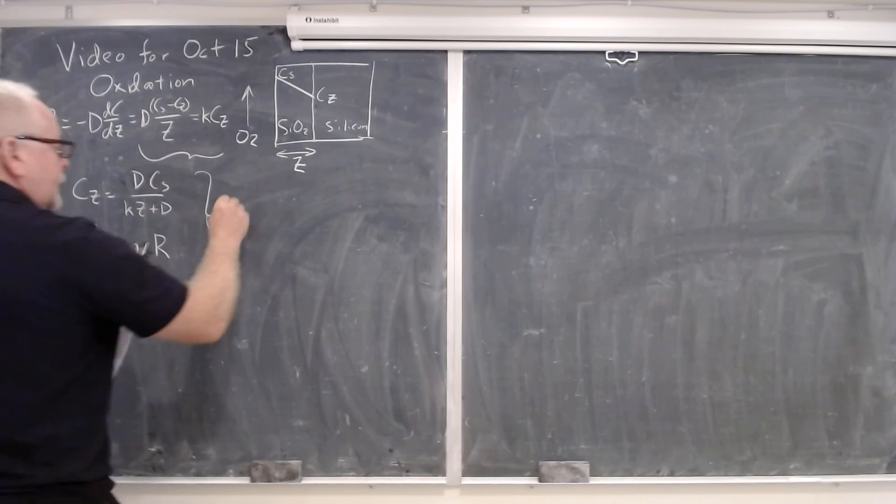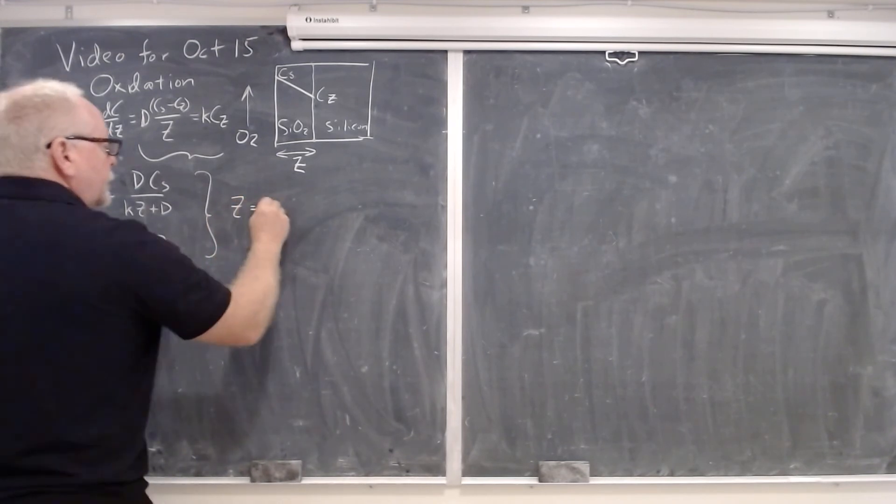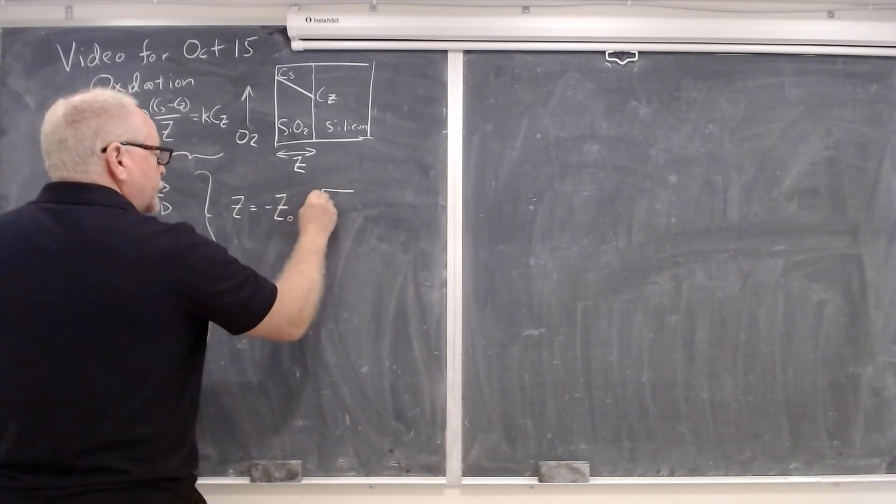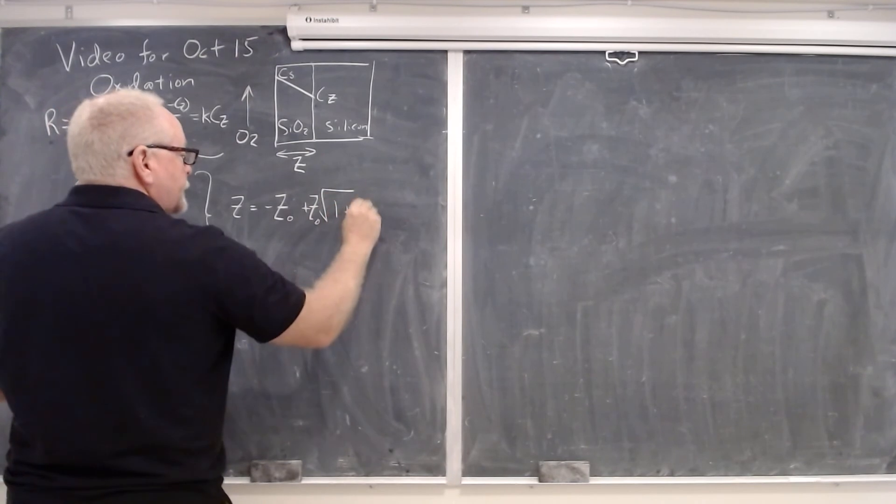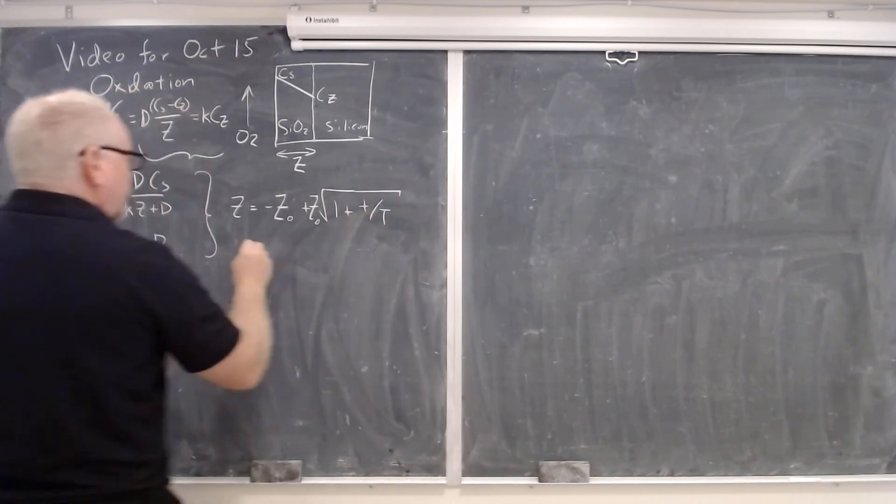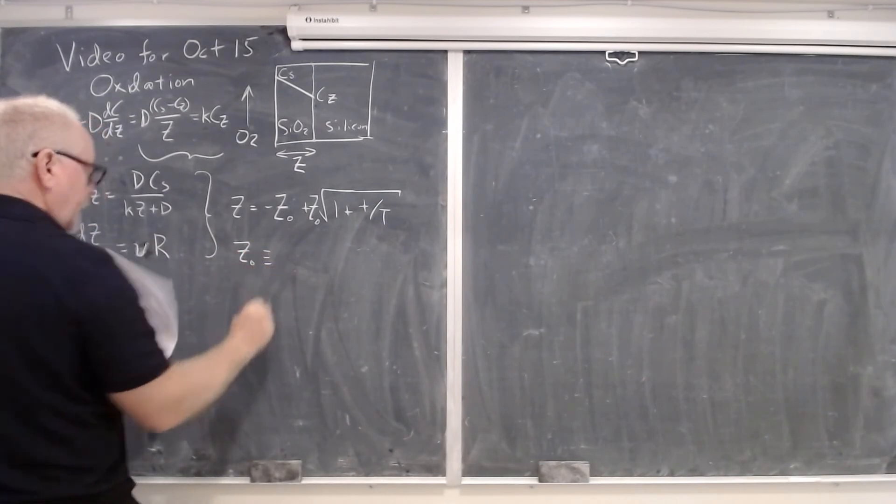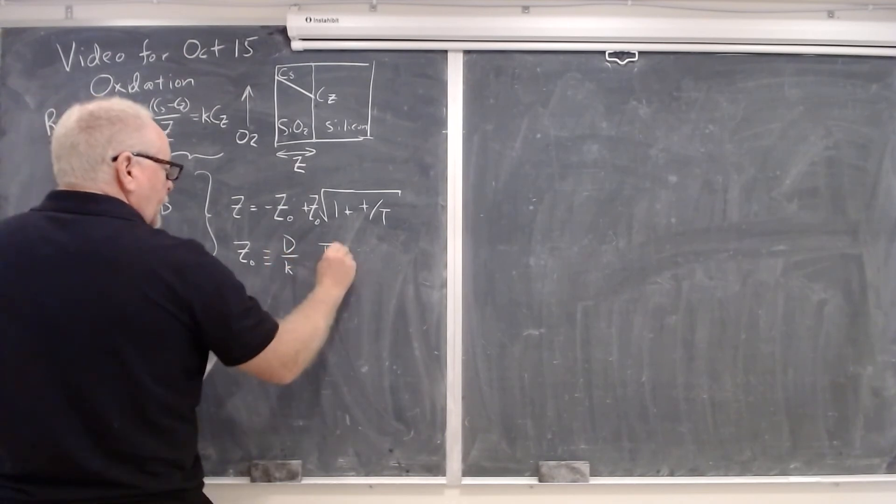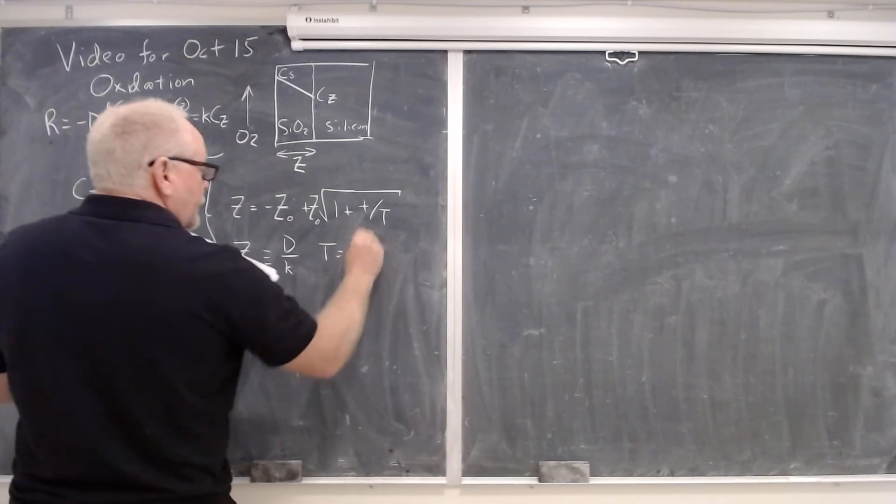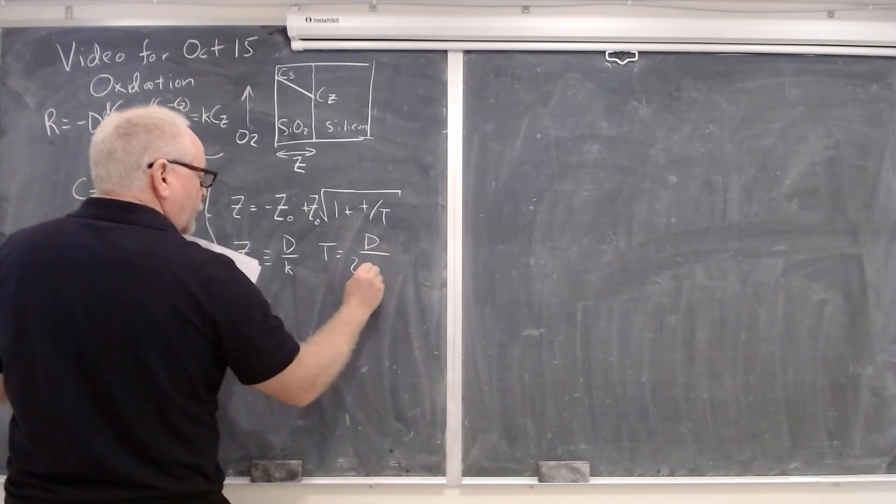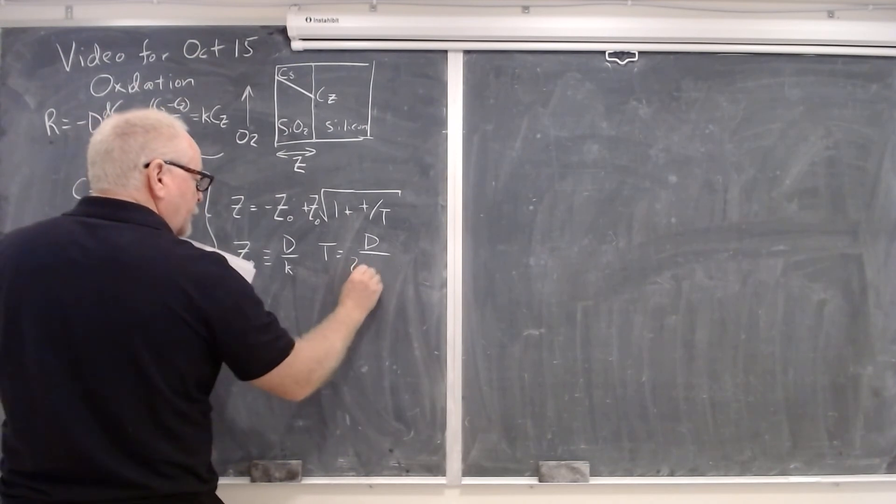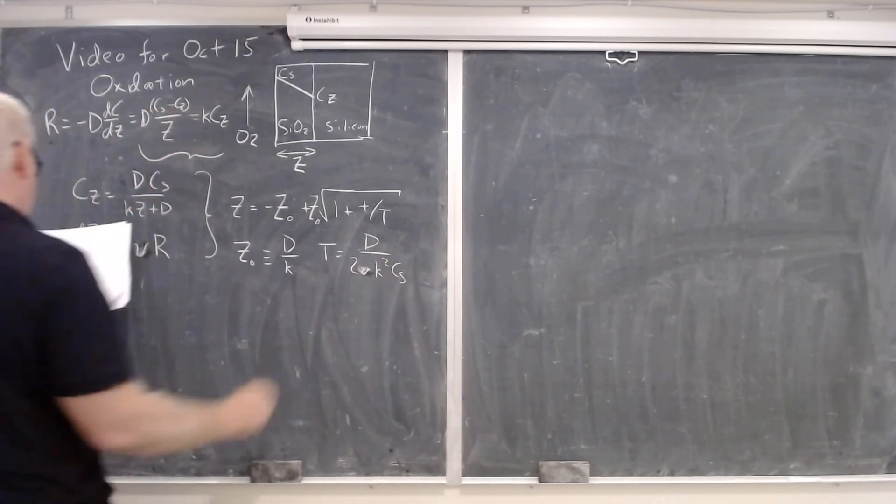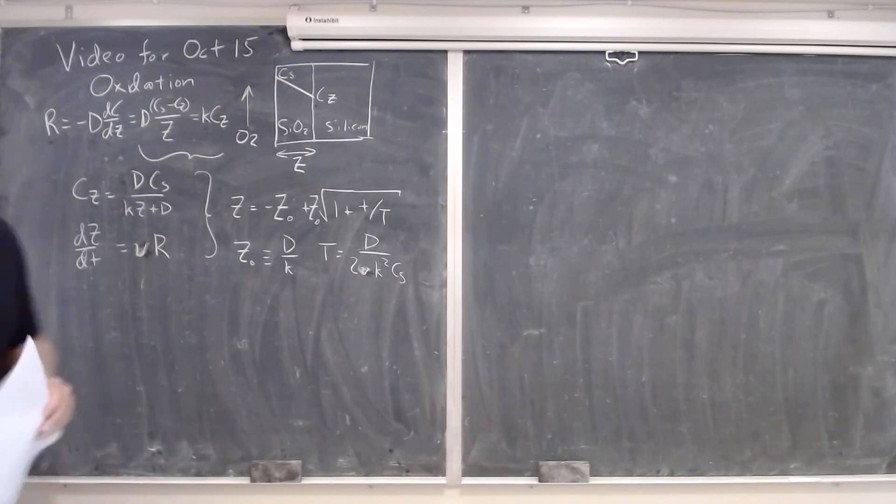So we put those two things together, and we came up with a differential equation that we solved. And we solved for Z is equal to minus Z naught plus Z naught times the square root of 1 plus T over capital T, where Z naught is defined as D over K and T is defined as D over 2 mu K squared Cs.